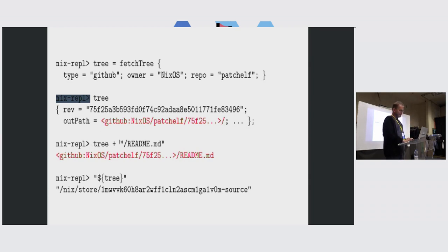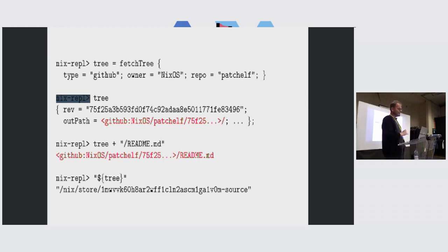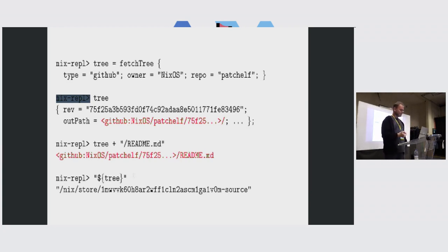If I do something like add the string /readme.md, I get a value that represents the file readme.md inside of that source tree, which is still lazily fetched — nothing has been copied. Only if I do something like string interpolation — dollar-brace tree — and I'm trying to pass something as an input to a derivation, then the derivation needs to be able to read the source tree, so it needs to be in the Nix store, and then it will get copied. But if you don't do that, it doesn't happen.